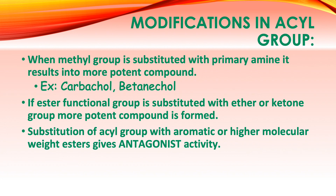If the ester functional group is substituted with an ether or ketone, it also produces a more potent compound. Substitution of the acyl group with aromatic or higher molecular weight esters provides antagonistic activity, which is unfavorable for indirect acting cholinomimetics. Therefore, to produce indirect acting cholinomimetic activity, you must avoid substituting the acyl group with bulky structures such as aromatic groups and higher molecular weight esters. That concludes indirect acting cholinomimetics.